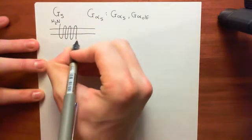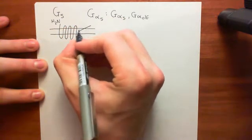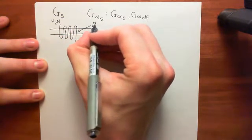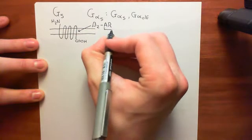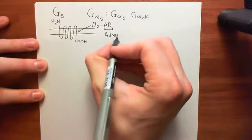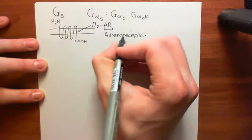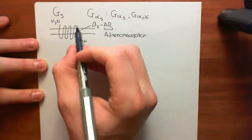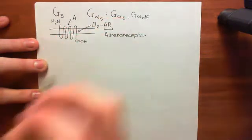Here is our G-protein coupled receptor with its seven membrane-spanning alpha helices. The prototypical example of a G-protein coupled receptor coupled to Gs would be a beta-2 adrenoreceptor — I'll put beta-2-AR. This is the receptor for adrenaline and noradrenaline, so it's called an adrenoreceptor, or AR for short. The ligand for beta-2 adrenoreceptors is either adrenaline or noradrenaline — let's say we've got adrenaline, which I'll abbreviate to A. Another name for adrenaline, by the way, is epinephrine.